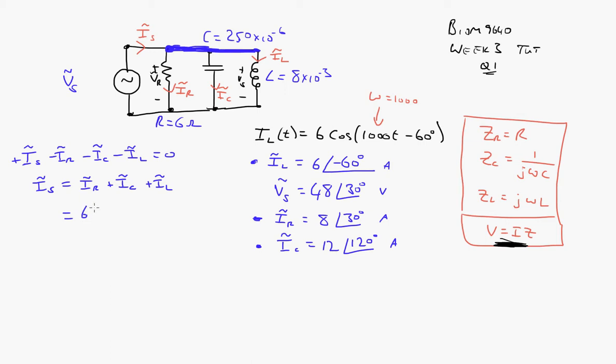We'll have eight at an angle of 30 degrees, plus IC is 12 at 120 degrees, plus IL is 6 at minus 60 degrees.